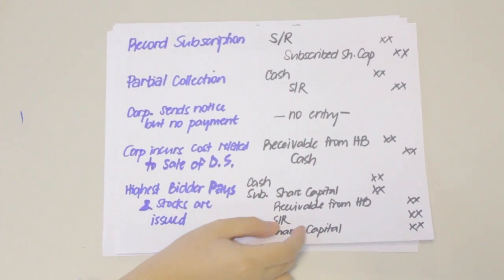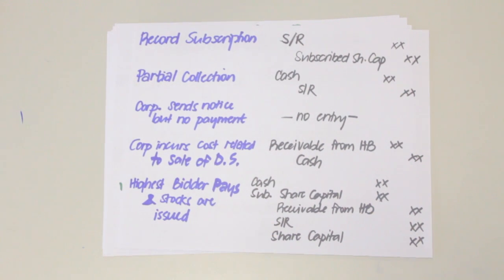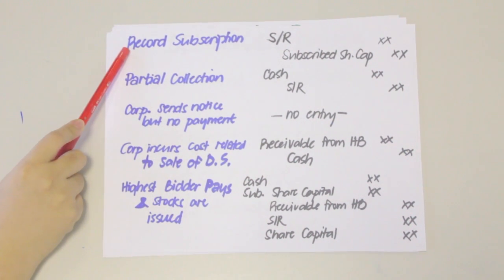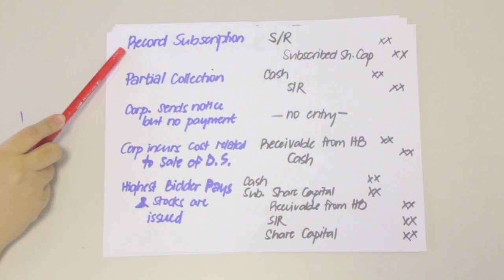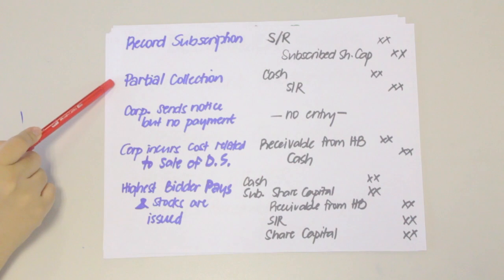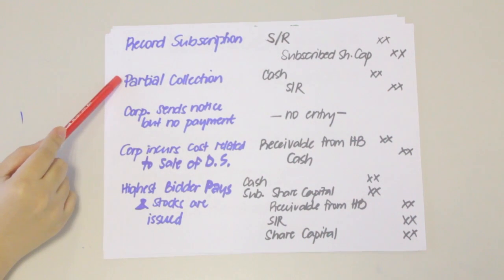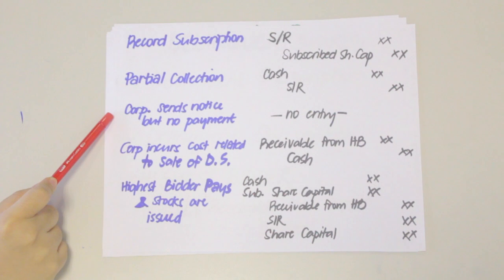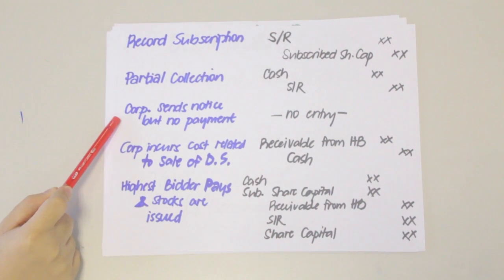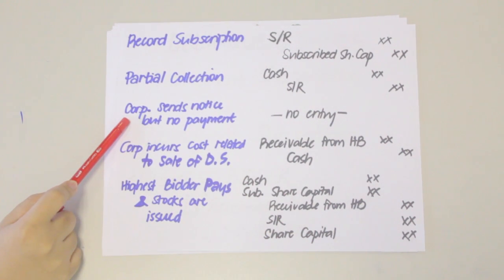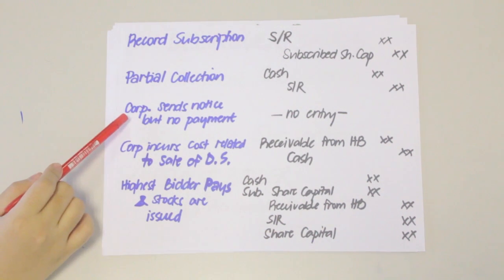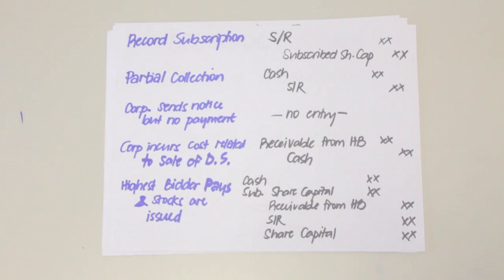Here are the entries necessary when accounting for delinquent subscription using the short method. First, you record any subscription for shares of stock: debit Subscriptions Receivable and credit Subscribed Share Capital. Then, there can be a partial collection: debit Cash and credit Subscriptions Receivable. The corporation may then send a notice to the subscriber — this is just an event and no entry is necessary. Since no payment was made, the shares are now considered delinquent and the corporation can advertise to sell the stocks.